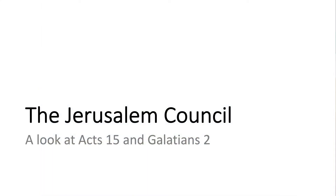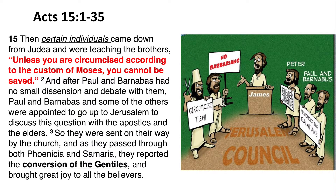Now we come to Acts chapter 15, which is what we're preaching on the first week of this two-week cycle — the story of the Jerusalem council. It says, 'Then certain individuals came down from Judea and were teaching the brothers' — they're still in Antioch — 'unless you are circumcised according to the custom of Moses, you cannot be saved.' In other words, they're saying you have to first become a Jew and follow Moses's law before you can follow Jesus. After Paul and Barnabas had no small dissension and debate with them, Paul and Barnabas and some of the others were appointed to go up to Jerusalem to discuss this question with the apostles and the elders.